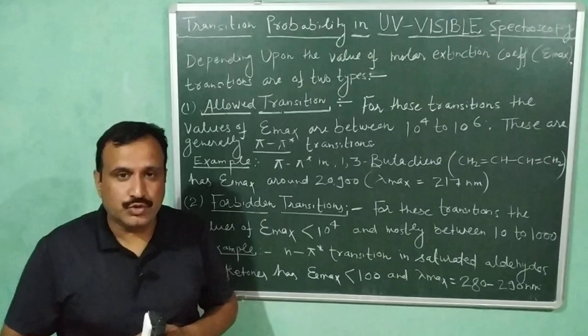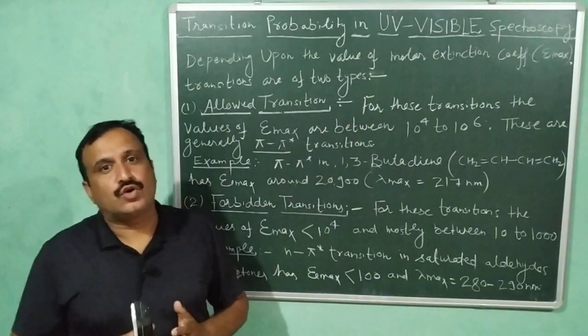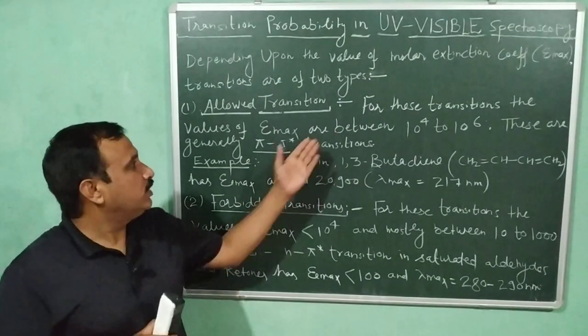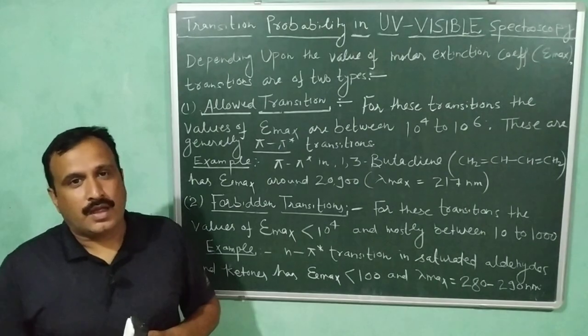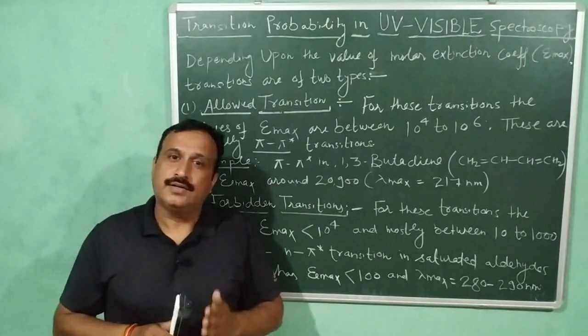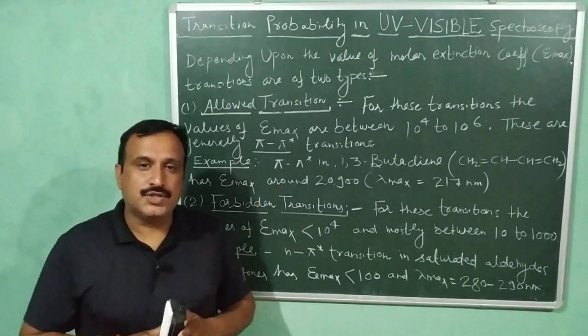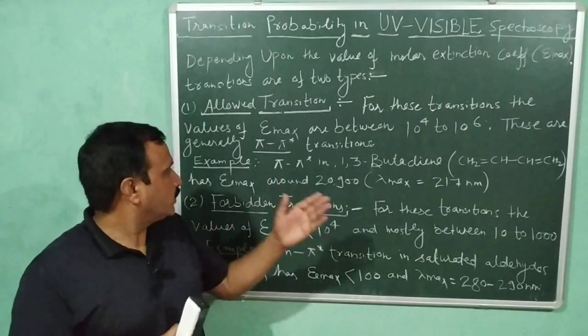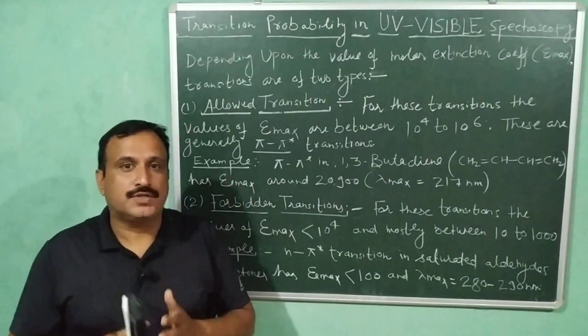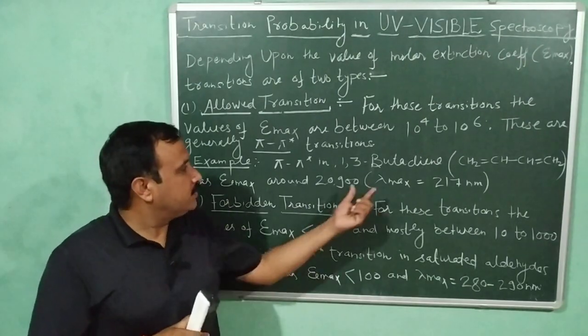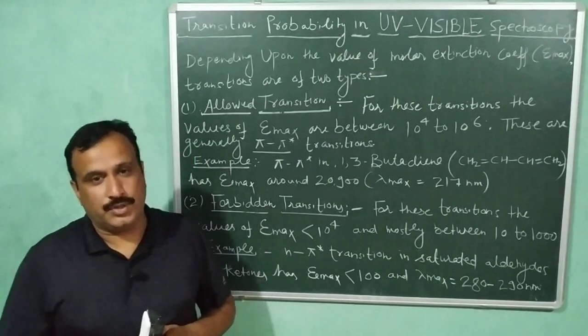Let us discuss the allowed transitions first. For these transitions, the values of molar extinction coefficient is between 10^4 to 10^6. These are generally π to π* transitions. For example, the π to π* transition in 1,3-butadiene has molar extinction coefficient around 20,900, a very large value, and the lambda maximum for this transition is 217 nanometer.